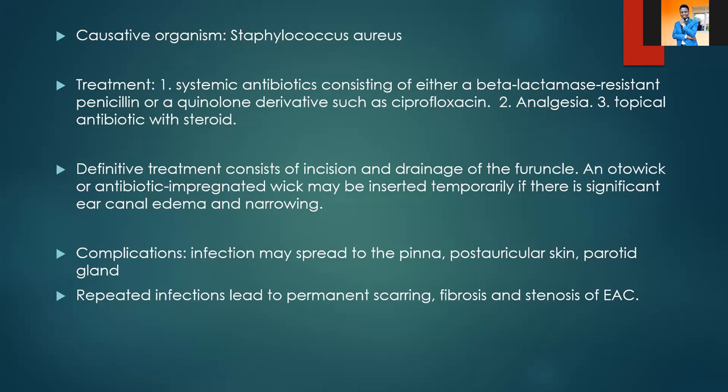We sometimes need to put what we call an aural wick, or an antibiotic-impregnated wick, which may be inserted temporarily if there is significant ear canal edema and narrowing. This helps to keep the ear canal patent while it is healing. So in summary: if the furuncle is not ready, give antibiotics, analgesia, and a topical ear drop. If it is ready, do incision and drainage, then put an antibiotic-impregnated wick to help the ear to heal while open.